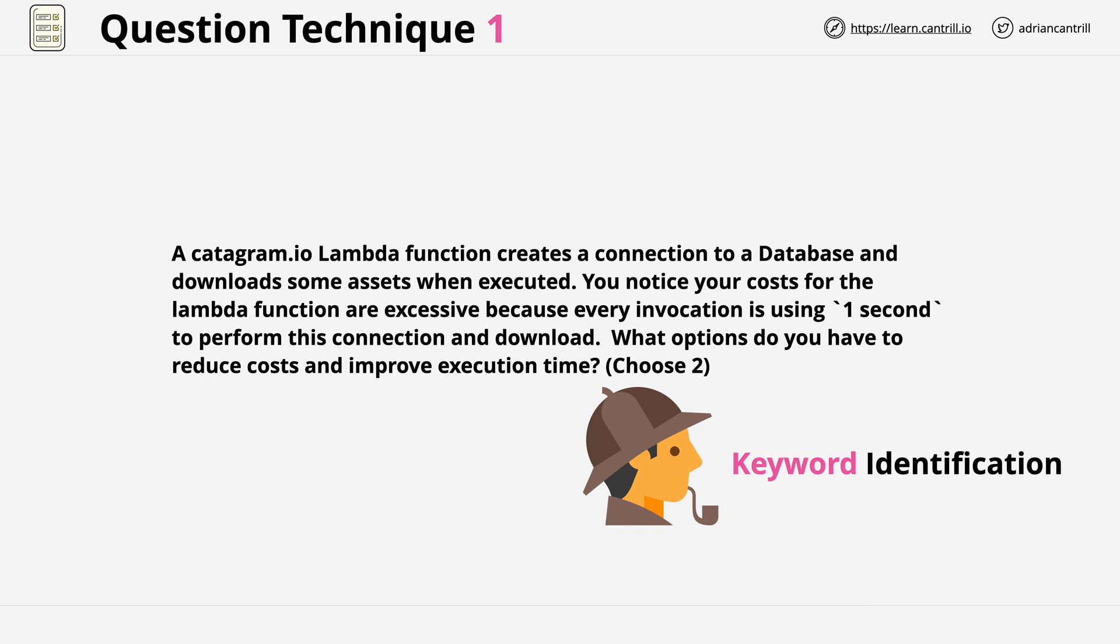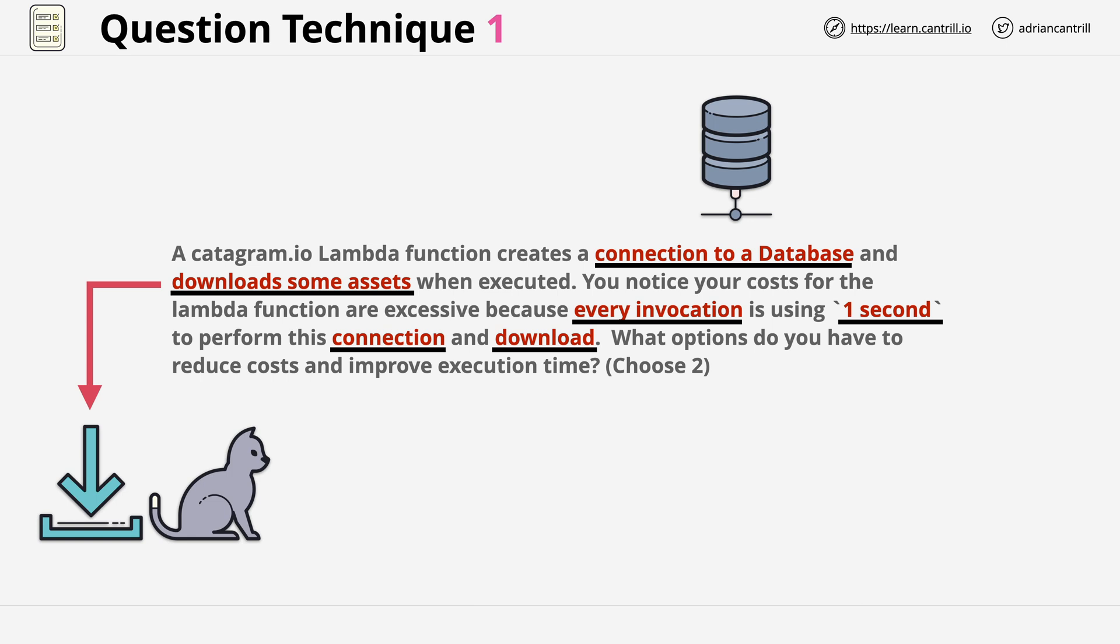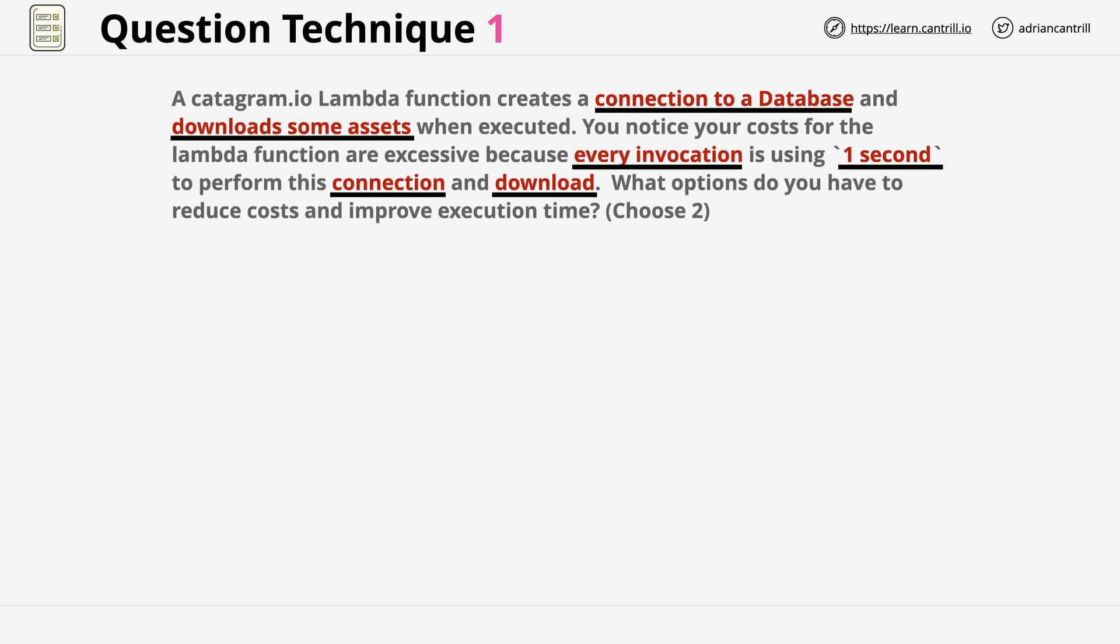At this point, let's have a look at what I found in the question. I've highlighted my main points in red, and for anyone with color vision deficiency, I've also underlined them. What jumps out at me is that there is a connection to a database and there is a download of some assets, and the fact that both of these are occurring every time the function is executed, which is adding one second onto every function execution. So at this point we have an idea on what the question is asking us and what the key points are. Let's move on and have a look at the answers that we have available.